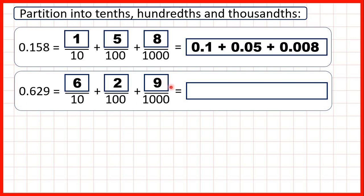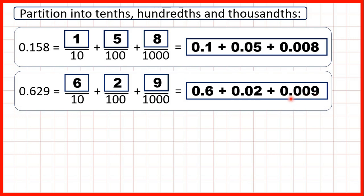In decimal form we can write this as 0.6, because the first digit is the tenths digit, plus 0.02 because the second digit is the hundredths digit, plus 0.009 because the third digit after the decimal point is the thousandths digit.